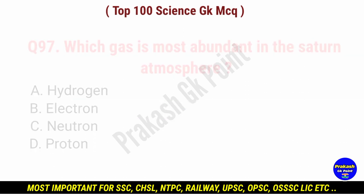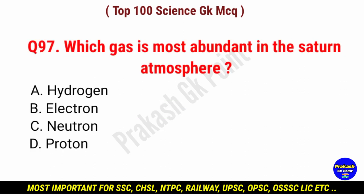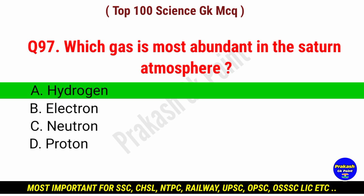Which gas is the most abundant in the Earth's atmosphere? Answer: option A, nitrogen.